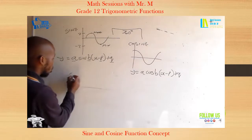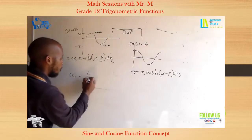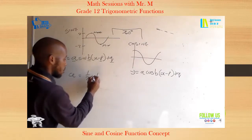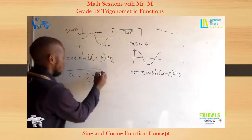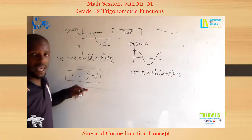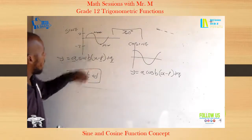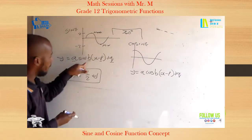So basically your amplitude will be half the distance of the minimum and the maximum. So let us move along. We have explained A. Let us go to B.